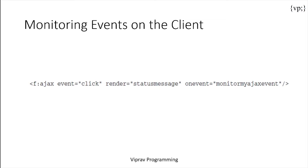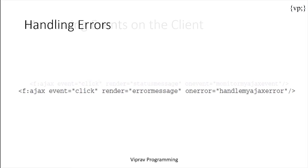Let's take a look at monitoring events on the client. You can see the ongoing events with the onevent attribute. Here, you can see our onevent attribute is monitor my AJAX event, which is a JavaScript function that monitors the AJAX request sent by the event. You also have to handle errors with AJAX, since just like JavaScript, you have to handle errors. There's something called the onerror attribute, which is handled by the handle my AJAX error JavaScript function.